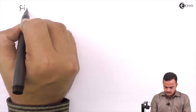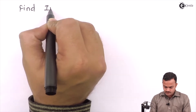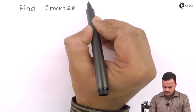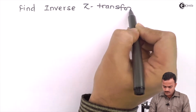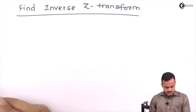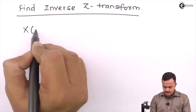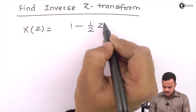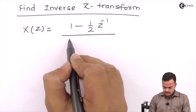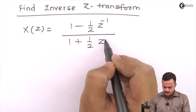Hi friends, in this video we are going to see inverse z-transform through various problems. Let's take a problem. We have to obtain the inverse z-transform. The problem is: x equals (1 - ½z⁻¹) upon (1 + ½z⁻¹).